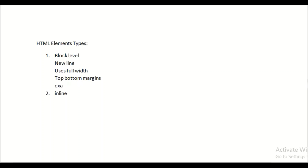Examples of block level elements are the h1 element, hr element, list element (li), paragraph element, table element, video element, and so on. Also, the div element, which is used for division or partitioning of your HTML document — these are all block level elements.